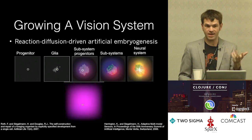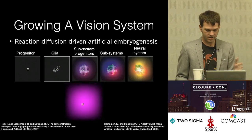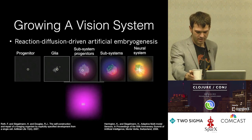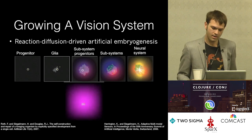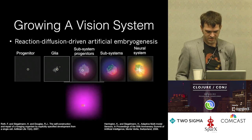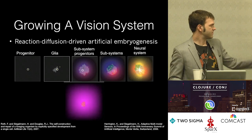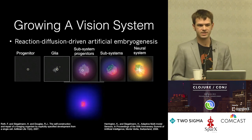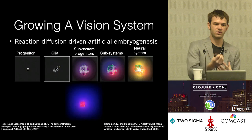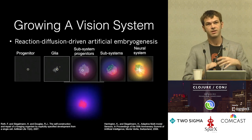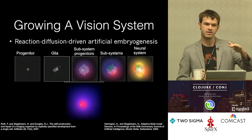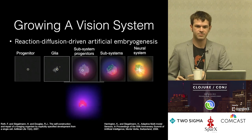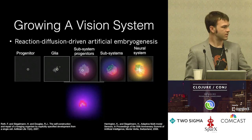That vision system grows out, and there are neat properties — you can blast some of the cells and they'll recover because of the reaction-diffusion system. They'll only grow if there's a certain level of chemicals in their environment. So if you kill off some cells, the chemistry depletes because none of the cells are producing it, and then the system will regrow.